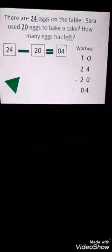In first block, write the first value. In second block, write the second value. Arrange in working column vertically: 24 minus 20. First, in the ones column, 4 minus 0 is equal to 4. In tens column, 2 minus 2 is equal to 0. So 4 eggs are left.